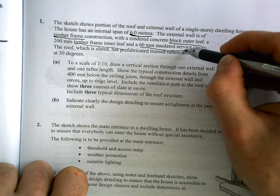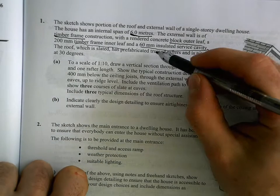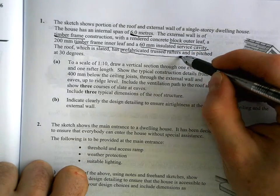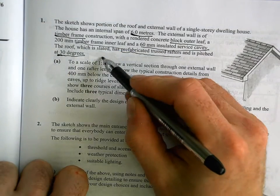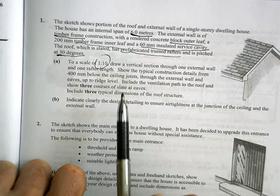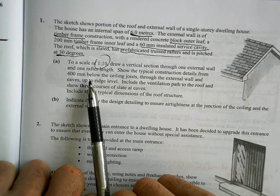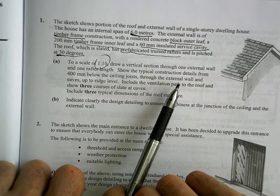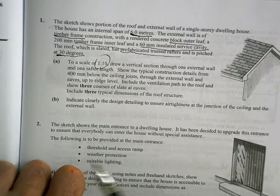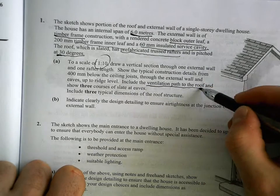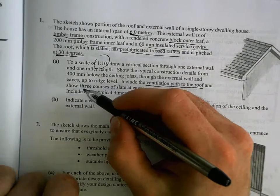And we've 60 mil of a cavity for servicing. The roof which is slated has prefabricated trussed rafters, so they're pre-made and then brought on site, and the pitch is 30 degrees. To a scale of one is to ten, draw a vertical section through one external wall and one rafter length, showing the typical construction details from 400 millimeters below the ceiling joists through the external wall and eaves up to the ridge level. Include the ventilation path to the roof and show three courses of slates at the eaves.